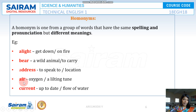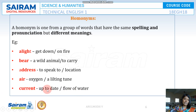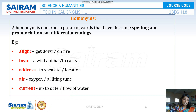AIR can mean oxygen or a lighting tune, and also to air a program — meaning to telecast it, as in 'they have aired the music.' CURRENT can mean up to date — for example, 'she has every current detail' — or the flow of water, as in 'today the current of the water is very heavy in the river, so do not go.'